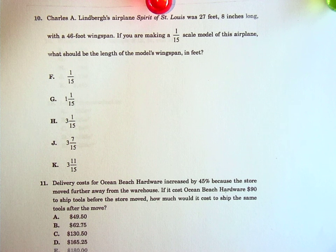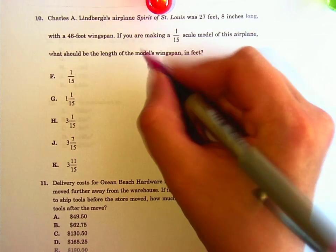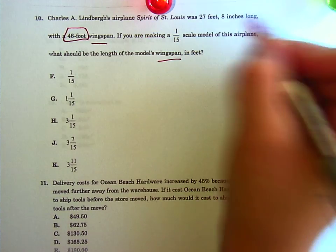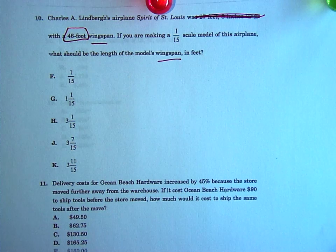Charles A. Lindbergh's airplane Spirit of St. Louis was 27 feet, 80 inches long. You're making a 1/15th scale model of this airplane. That means that everything in the model airplane, whatever size it is in the original, if you divide by 15, that's what size it is in the bottom one. What should be the length of the model wingspan in feet? Okay, so ignore all that other junk. All it cares about is wingspan, so we care about this number right here, and we don't care at all about that 27 feet, those inches, anything like that.